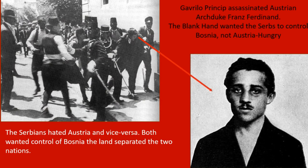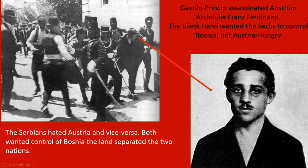It all boils down to simple things: men with power want more power, countries with land want more land. Austria-Hungary and the Serbs — the country of Serbia, populated by a group called the Slavs — both wanted control of a piece of land called Bosnia. Austria-Hungary wanted Bosnia, and the Black Hand wanted Bosnia under Serbia's control. So you have two groups fighting for the same piece of land. One group has a terrorist organization that murders the leader of the other group — Austria-Hungary. Here's a photo of Princip being arrested after the assassination.